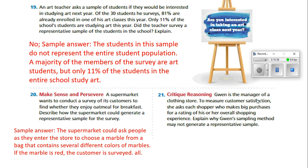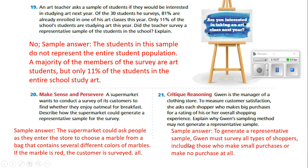Number 21. Gwen is the manager of a clothing store. To measure customer satisfaction, she asks each shopper who makes big purchases for a rating of their overall shopping experience. Explain why Gwen's sampling method may not generate a representative sample. If you make a big purchase, you're probably happy with the store. To generate a representative sample, Gwen must survey all types of customers, including those who make small purchases or no purchases at all — standing by the exit asking customers as they leave would be more accurate.